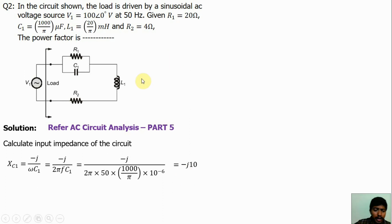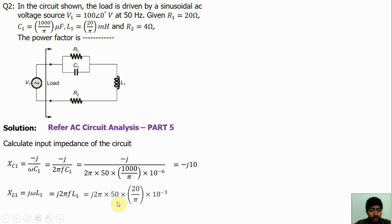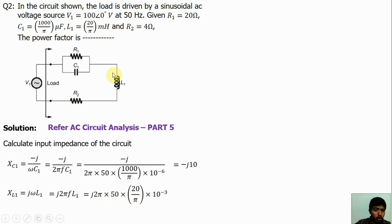Now we have to find the inductive reactance. XL1 equals jωL1. We know that formula. Substituting ω equals 2πF, and L1 value is given in millihenry, so 10⁻³. With 2πF value of π and L value of 25 millihenry (10⁻³), simplifying this equation, we get the inductive reactance XL equals j2.